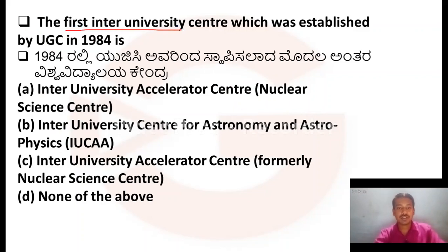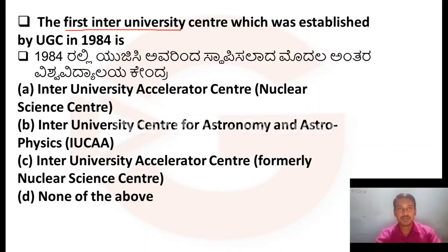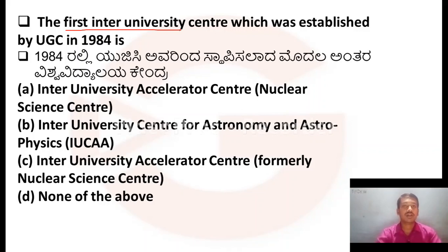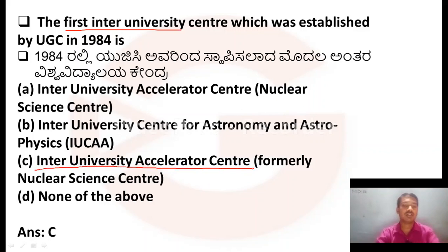The first inter-university center established by UGC in the year 1984 is: Option A, Inter-University Accelerator Center (Nuclear Science Center). Option B, Inter-University Center for Astronomy and Astrophysics (IUCAA). Option C, Inter-University Accelerator Center, formally known as Nuclear Science Center. Option D, also known as Nuclear Science Center.